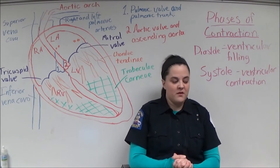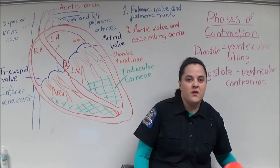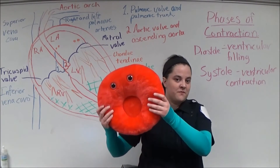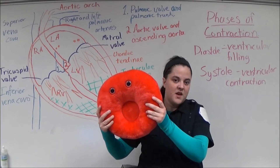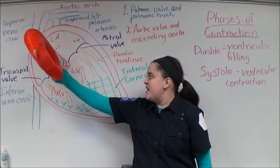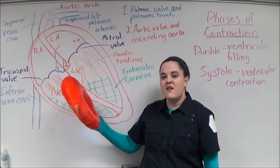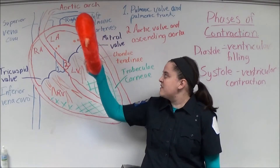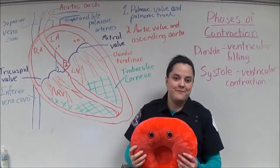For this video, we're going to explain it from the perspective of Eddie Erythrocyte as he enters the right atrium, travels through the right side of the heart out to the lungs, back to the left side of the heart, and out to the body.